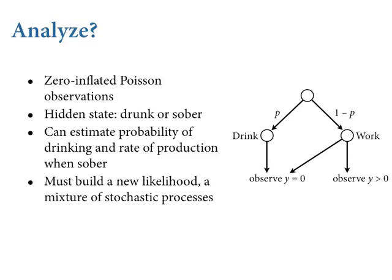This is called a zero-inflated Poisson process — the most common zero-inflated model. There's a hidden state here generating the data: whether the monks were drunk or sober on that day. There's an initial probability p — they drink p of the time, and you always observe a zero. One minus p of the time, they work, but there's some chance of a zero even when they work. When you observe a number greater than zero, you know they weren't partying. When you observe a zero, you don't know. Our challenge is to estimate how much partying the monks are doing.